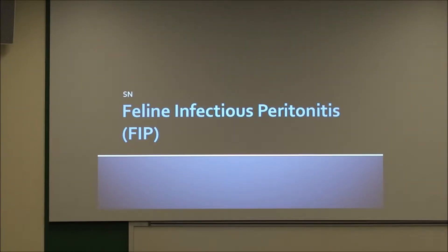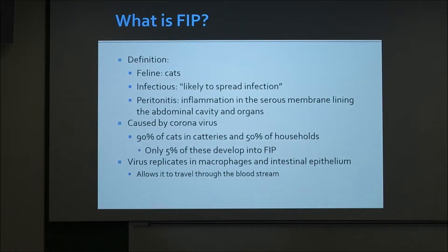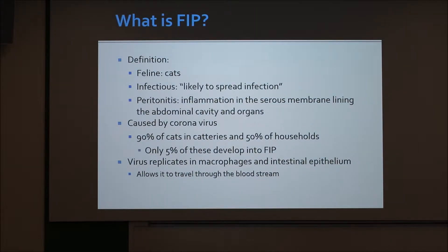Today we're going to talk about feline infectious peritonitis, otherwise known as FIP. By definition, feline encompasses cats, infectious means that it's likely to spread infection, and peritonitis is the inflammation in the serous membrane lining the abdominal cavity and organs.